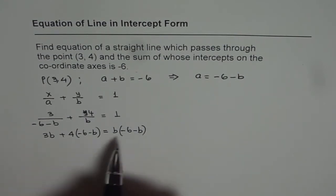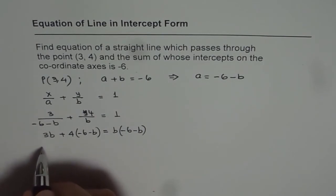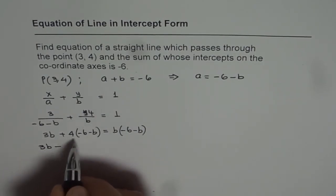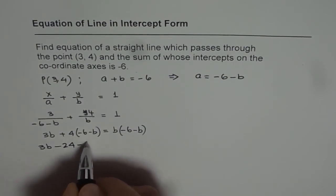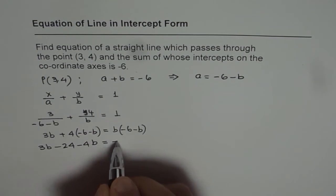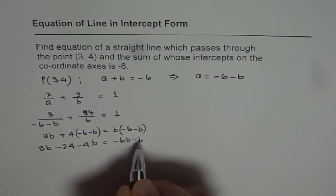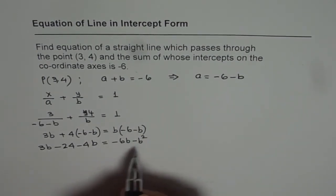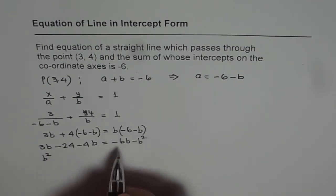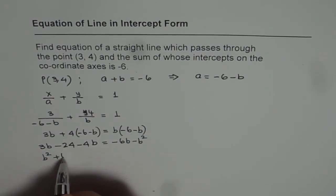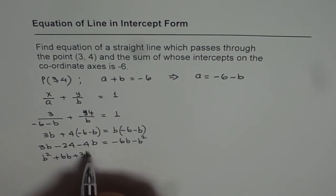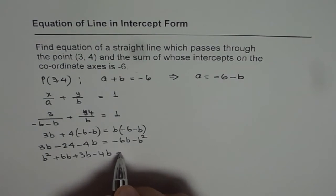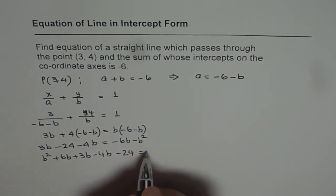We can bring all the terms together and solve for b. We have 3b - 4 times 6 is 24 - 4b = -6b - b². Bringing terms to the left, we get b².